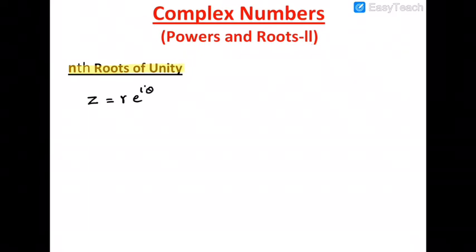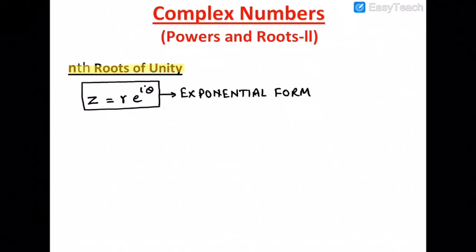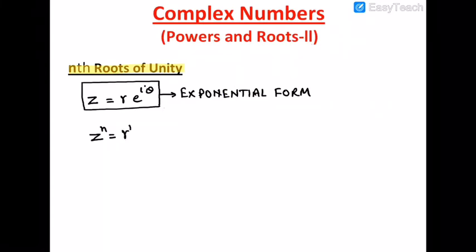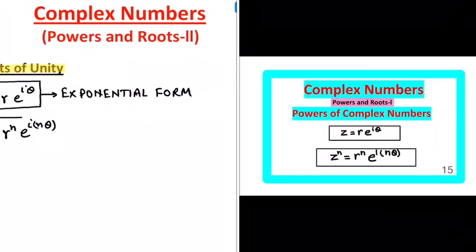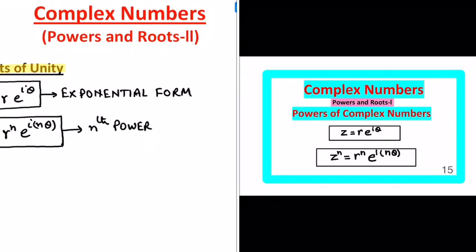As we know, the exponential form of a complex number is z = r·e^(iθ), so its nth power will be z^n = r^n · e^(inθ), which we have already explained in video number 15 of this series on complex numbers, under the title 'Powers of Complex Numbers'.